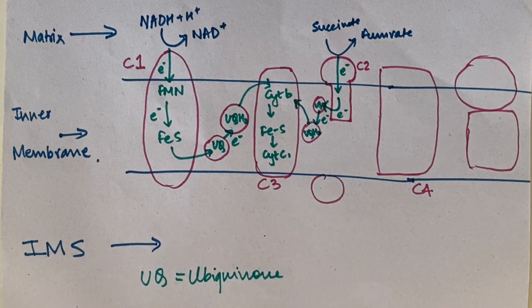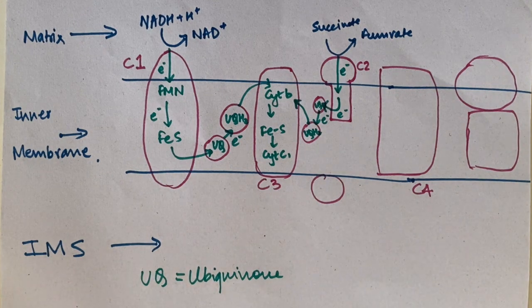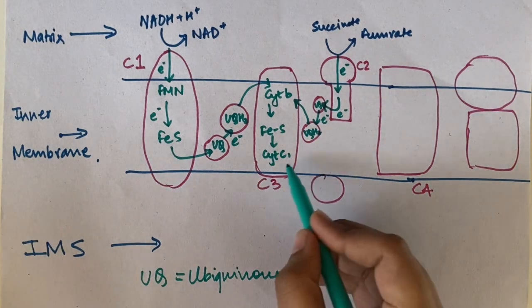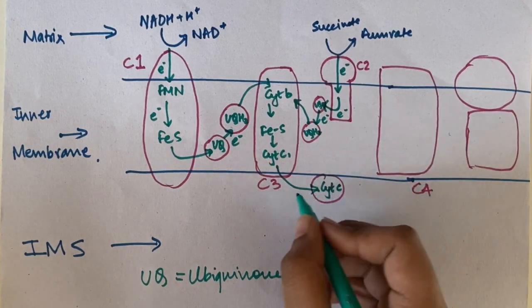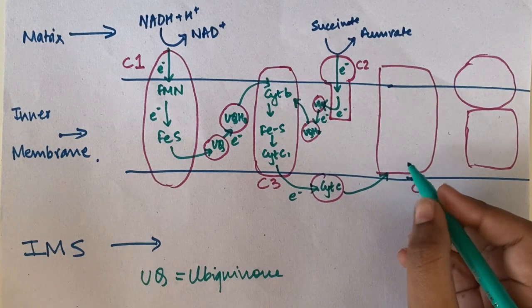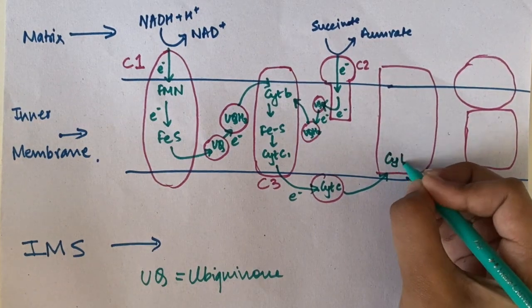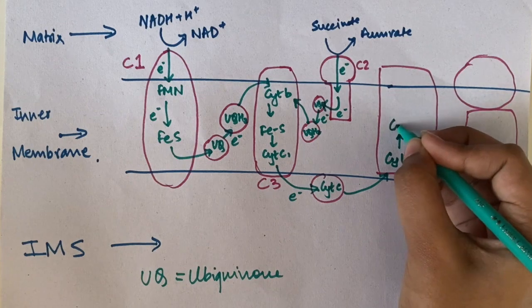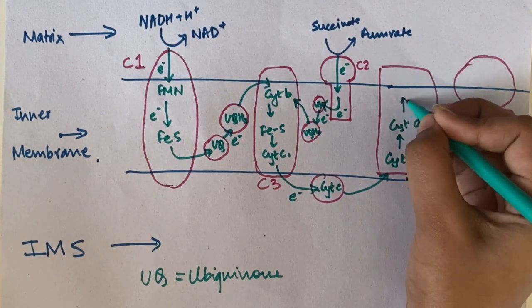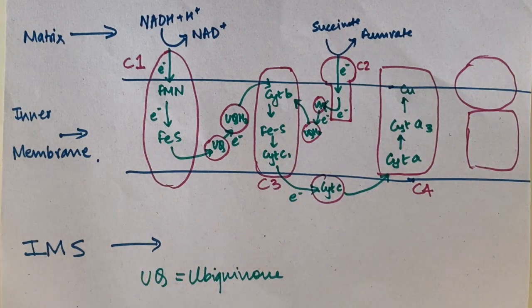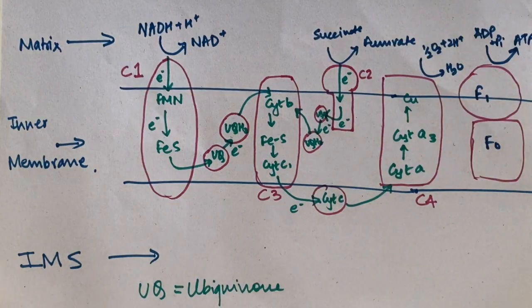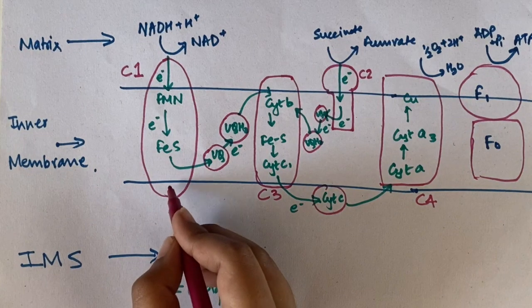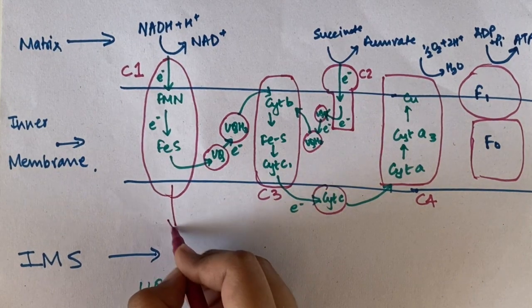Complex 3 donates electrons to cytochrome c, which then donates its electrons to cytochrome a and cytochrome a3 — which together constitute Complex 4, cytochrome c oxidase. The electrons received by Complex 4 are used to convert oxygen into water, with the help of two hydrogen ions from the matrix of the mitochondria.